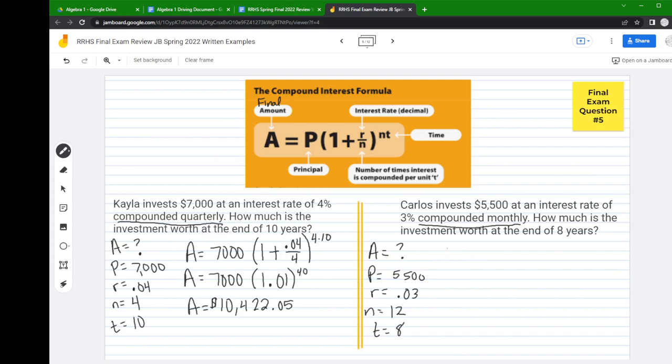Now that we have those, we plug into the formula. The final amount equals the principal times one plus R over N to the N times T. Then I do a cleanup step. Inside the parentheses, 0.03 divided by twelve is 0.0025, you add one to that. Then twelve times eight is ninety-six.